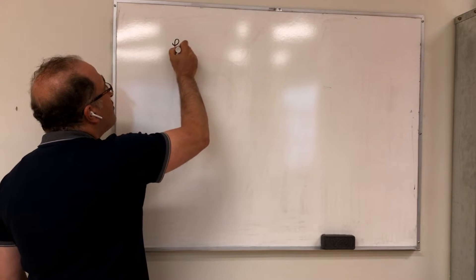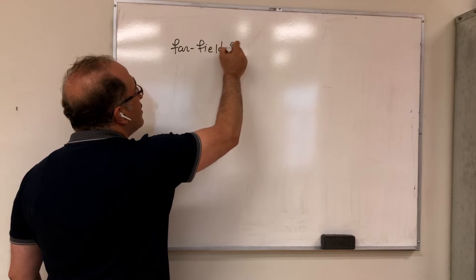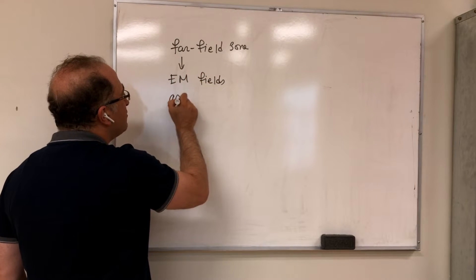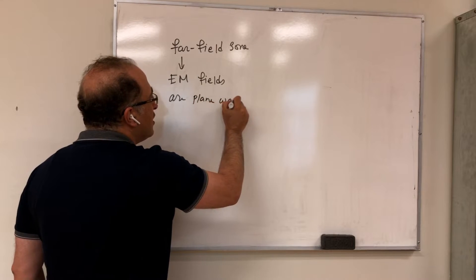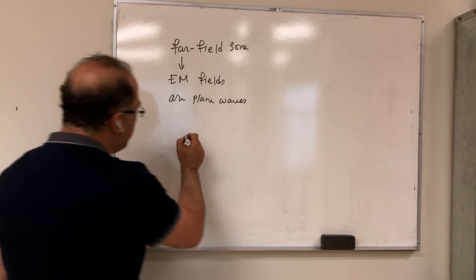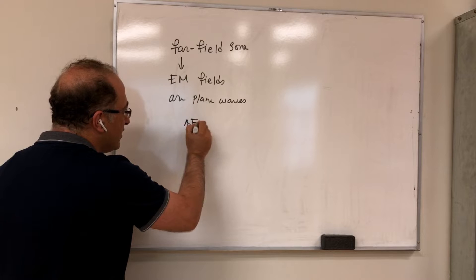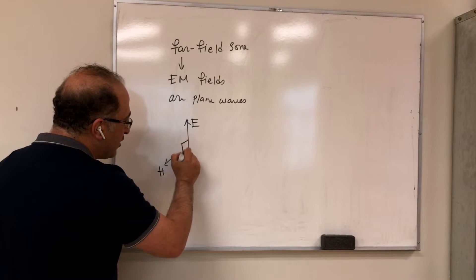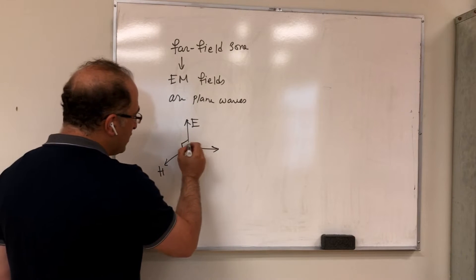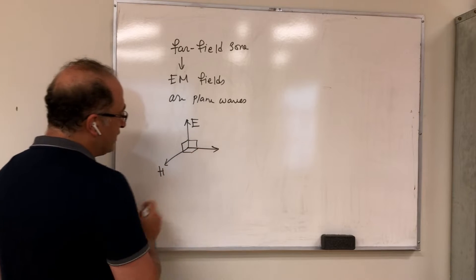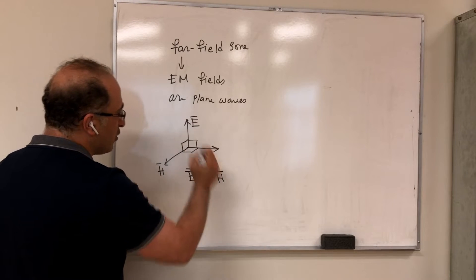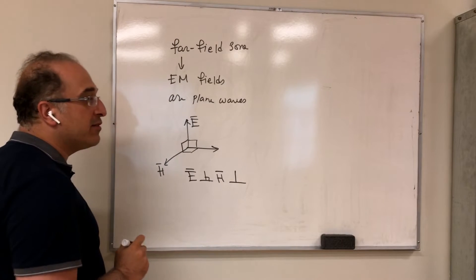So when we are in the far-field zone, we assume that our electromagnetic fields are plane waves. That essentially means that if you have this E field and this is going to be H, E is perpendicular to H, and both of them are perpendicular to the direction of propagation. So as you see, these are all perpendicular — E is perpendicular to H, and also they're perpendicular to the direction of propagation.